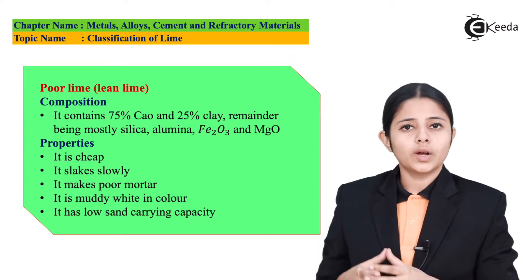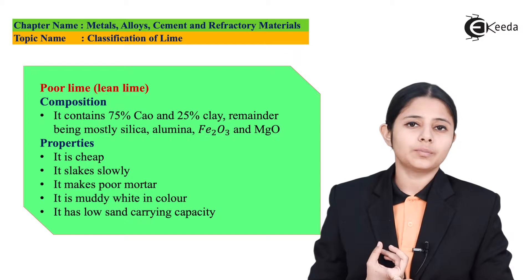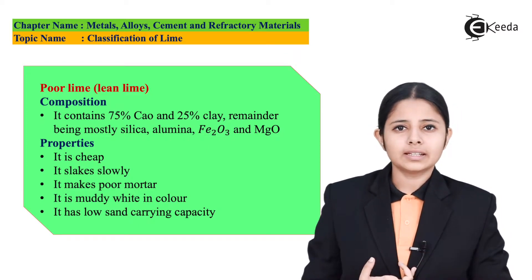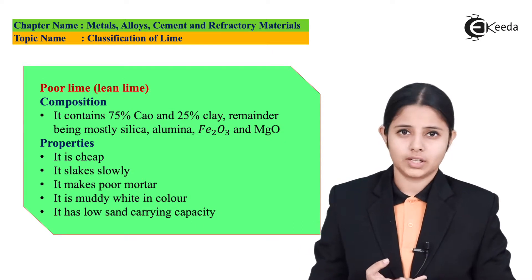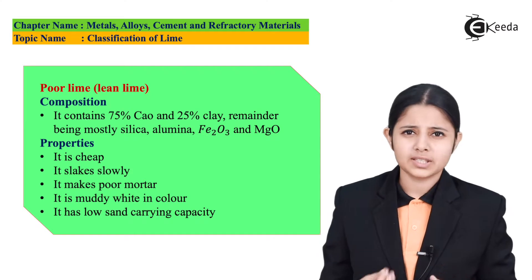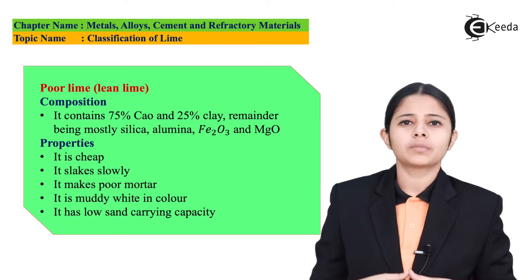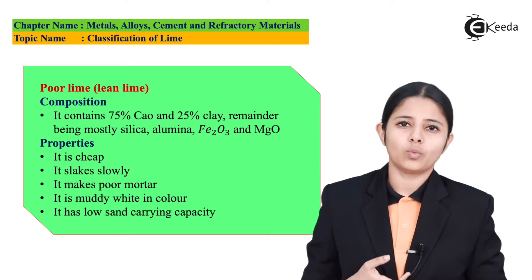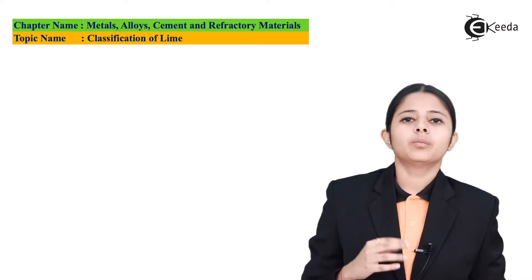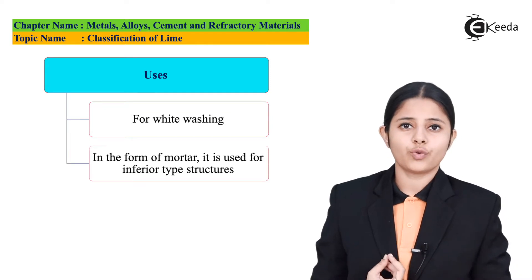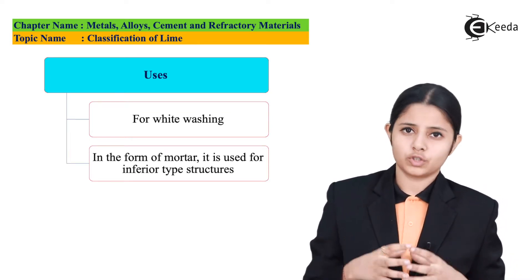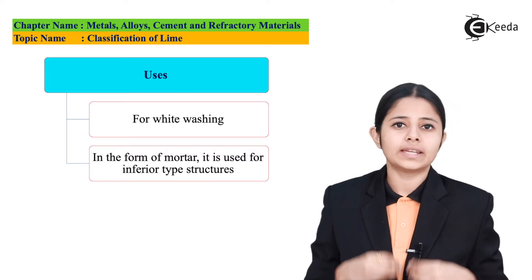Poor lime is comparatively cheaper than fat lime. It has low sand capacity and it is not perfectly white in colour because of the clay present in it. About 25% of the entire poor lime consists of clay, so it is around muddy white in colour and it produces low quality mortar. It is used for whitewashing walls and for making inferior type of structures which are not very important.